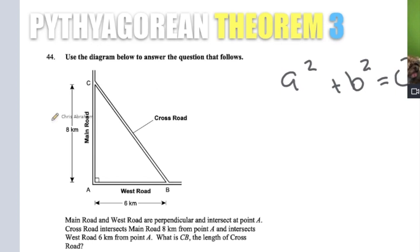And then it says, we'll read this over. We have Main Street here. It's perpendicular to West Street. There's a cross street. It says Main Road and West Road are perpendicular and intersect at point A. Okay. I'll circle this right here perpendicular. That means that they meet at 90 degrees.